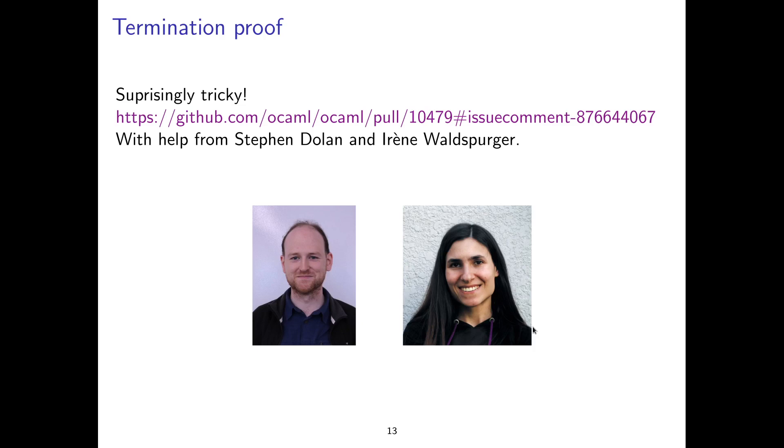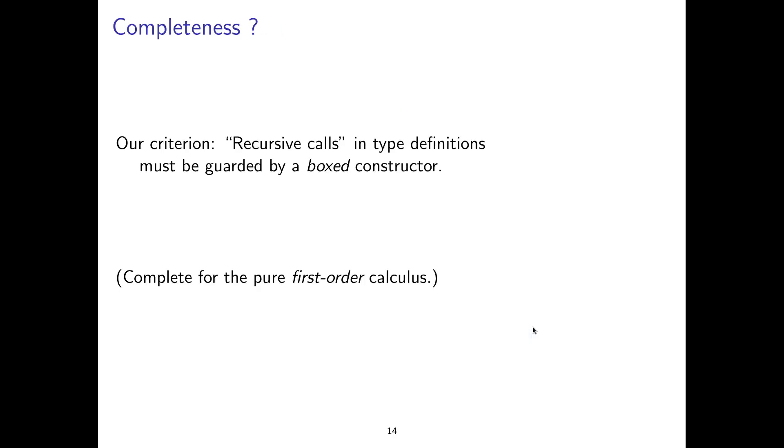Proving the termination of this algorithm is surprisingly tricky. So it was done in GitHub, so Nicolas and I thought of a proof and we wrote it as a GitHub comment. And then Stephen Dolan found a bug in it and we proposed a new proof. And then he found a bug again and again. And I think at the third or fourth iteration, I complained in frustration to Irene Valsperger, who proposed a stronger argument, which we – and at this point we had the proof that everyone, Nicolas and I, Stephen and Irene, were happy about. So this is really a collaborative development. And now you may ask, well, is it complete? What are the definitions that would terminate but that you reject?